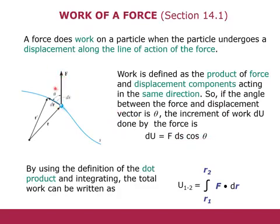This is the component of the force along the direction of motion. Work is represented by U. This is the differential work done by the force on the particle moving in that direction. As per the definition of the dot product, work done in moving the particle from position 1 to 2 is the integral of F·dr, where r1 and r2 are the initial and final position vectors of the particle.